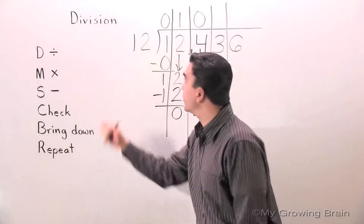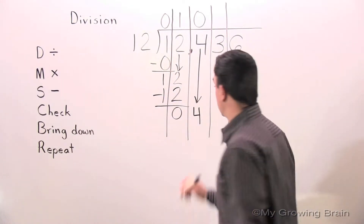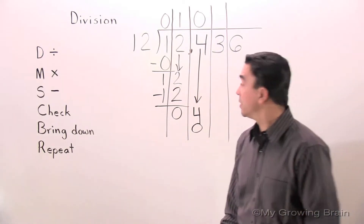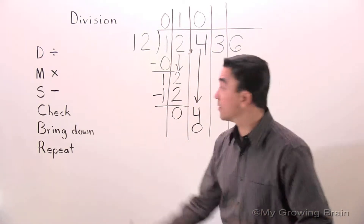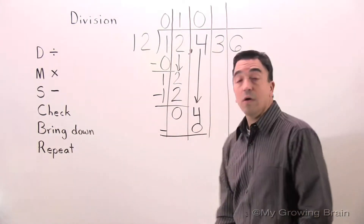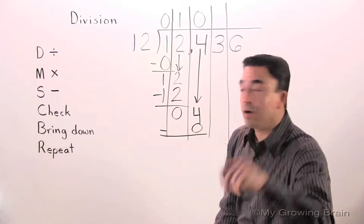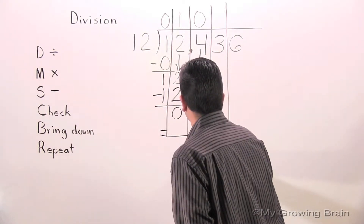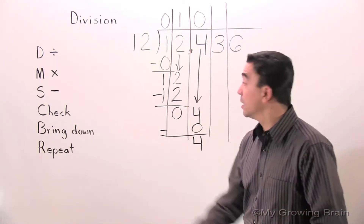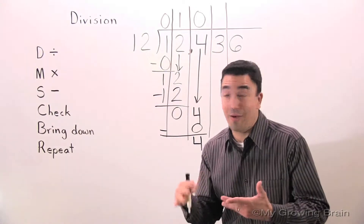Next step: Multiply. 12 times 0 equals 0. Next step: Subtract. 4 minus 0 equals 4. Next step: Check — 4 is less than 12. Keep on going.